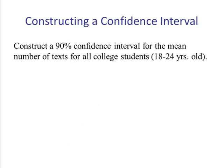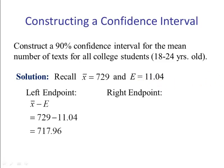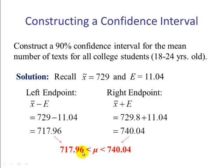If we construct the confidence interval for the mean number of texts of all college students, we use our point estimate x̄, 729, and our margin of error, which is 11.04. So the lower limit becomes 717.96 and the upper limit becomes 740.04. Our confidence interval is 717.96 to 740.04.